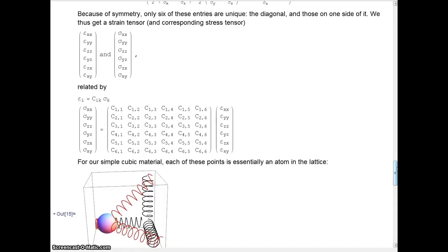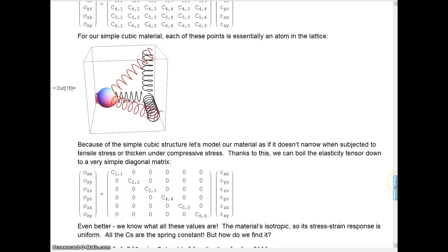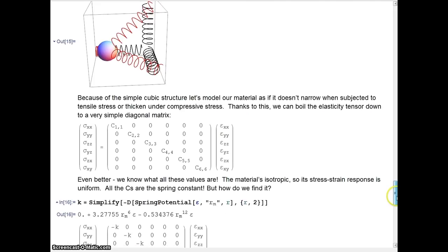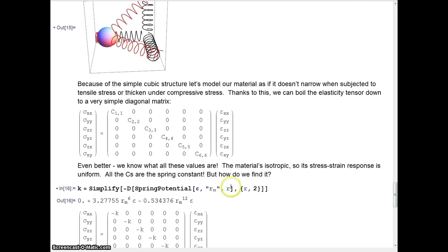So here are our diagonal elasticity values, and if we do what I did before and simplify that spring potential and grab the slope of that line, we get our spring constant. So if this were a spring, that's what the spring constant would be. We just plug that in here to our matrix, and we get, oh look, it's Hooke's Law.